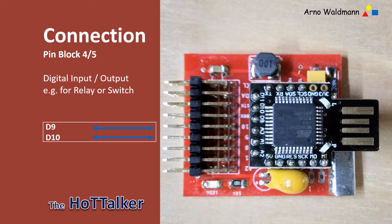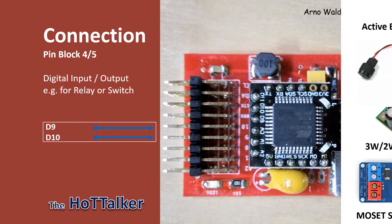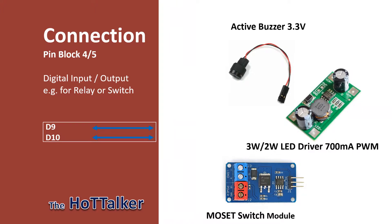Pin blocks 4 and 5 are for digital input and output devices. A specific output use has not been specified for this connector block yet. Optionally, only an Active Buzzer was previously connected to these connections. One could connect, for example, a MOSFET module as a switch or a 750mA LED driver stage with PWM connector to control a power LED as navigation light.